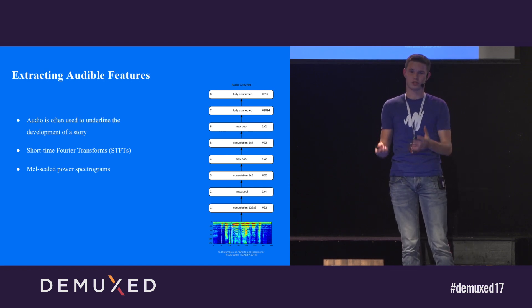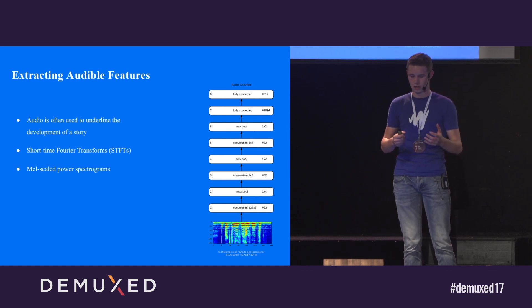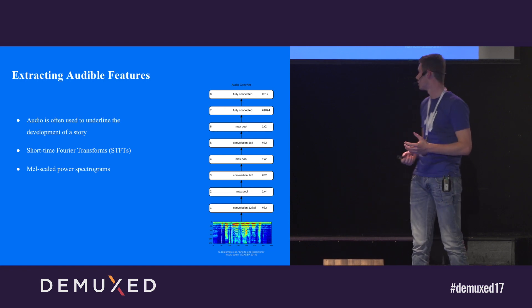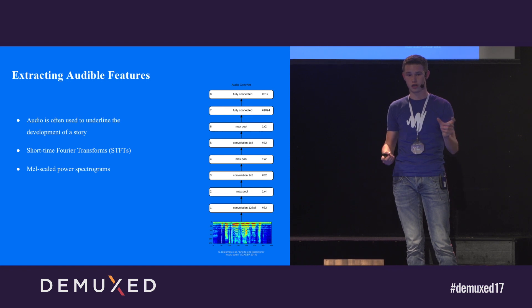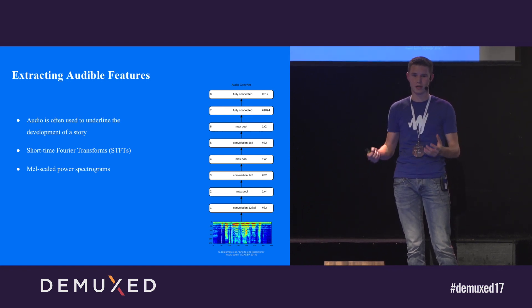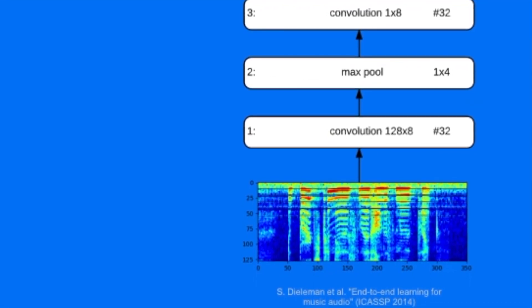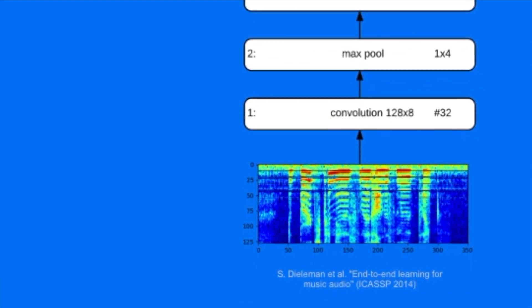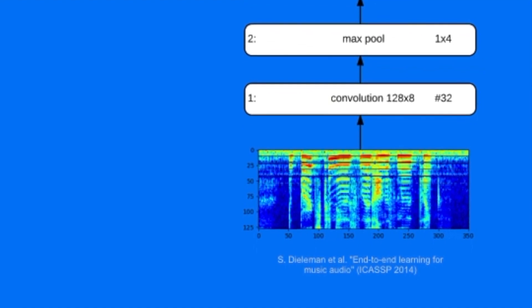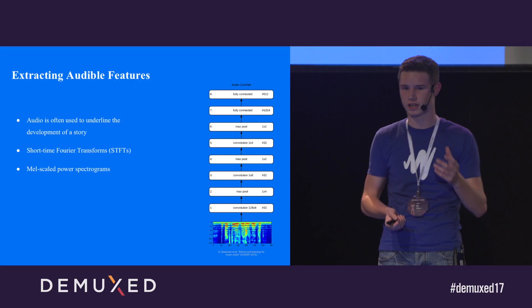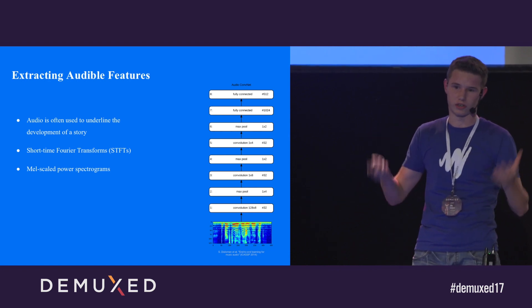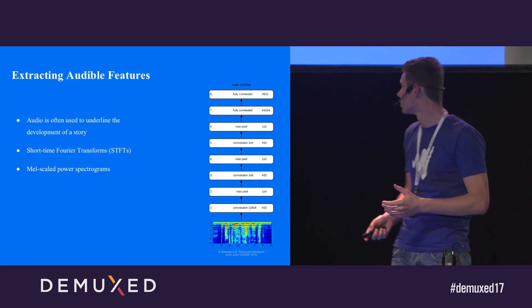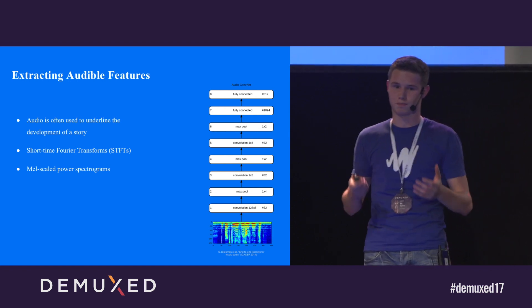Besides extracting visual features, we also want to take into account the audio of a shot. We do this by encoding audio as an image. We sample audio from shots and convert it into a mel spectrogram. A mel spectrogram has frequency bins on one axis and time on the other axis, and it indicates the intensity of certain frequencies in sound. It's a mel scale because the mel scale is based on the human auditory system — lower frequencies are way more obvious and more important for hearing than higher frequencies. Viewers at an older age cannot distinguish between many high frequencies, so that's why we use this logarithmic scale.